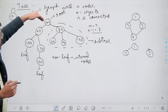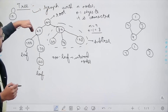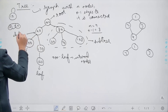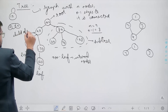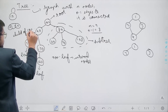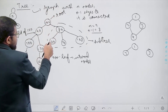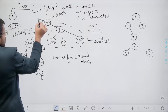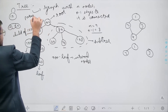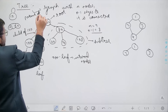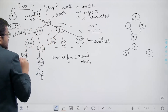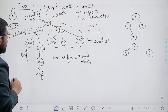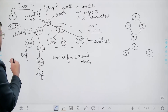The direct node below another is called its child. For example, 90 is directly below 100, so 90 is called the child of 100. Similarly, 80 is the child of 100, and 60 is the child of 80. Conversely, 100 is called the parent of 90, 100 is also the parent of 80, and 150 is the parent of 160.